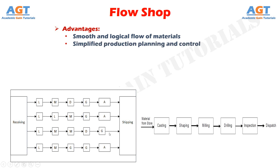Simplified production planning and control: manufacturing operations are simple in flow line manufacturing, which simplifies production planning and control. Scheduling jobs, controlling materials, and performing machine operations become very simple in flow line manufacturing.